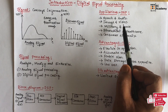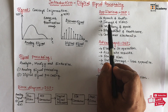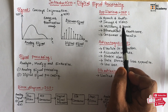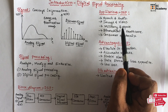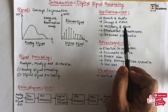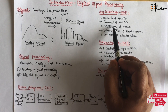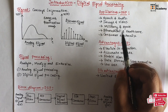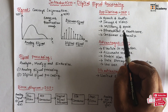Digital signal processing has a wide range of applications. It can be used in speech and audio processing — for example, speech recognition, speech synthesis, noise filtering, coding, and compression of signals. It can be used for image and video processing — for example, enhancing, coding, compression, animation, etc.